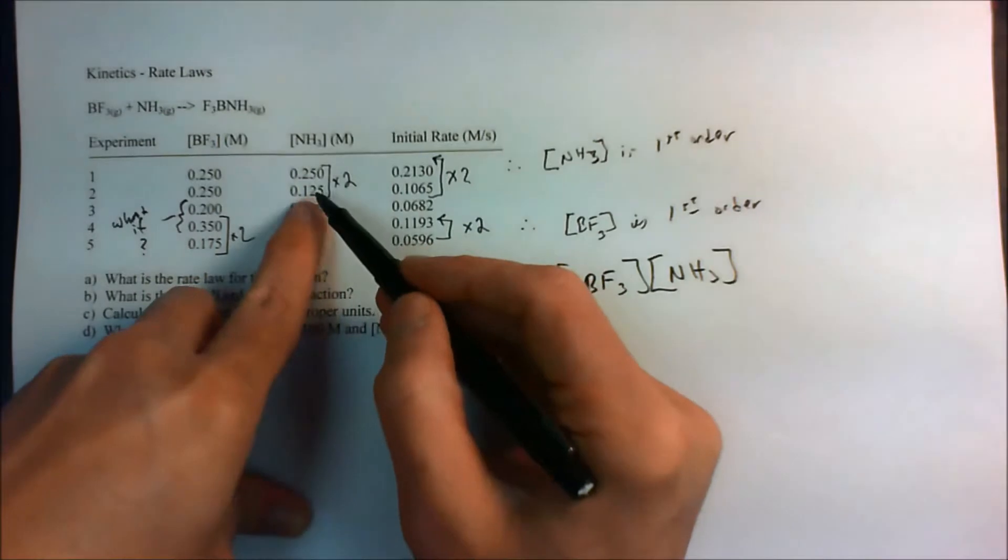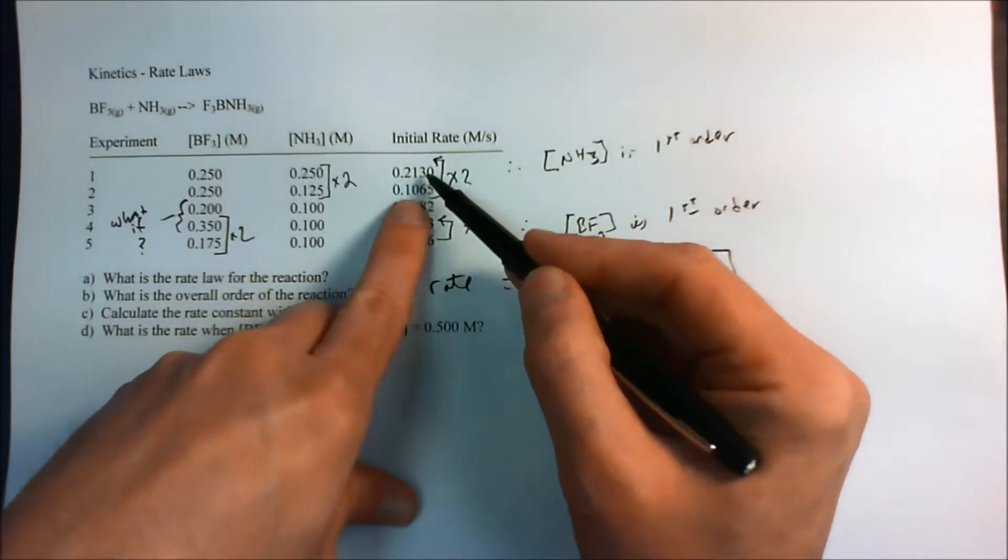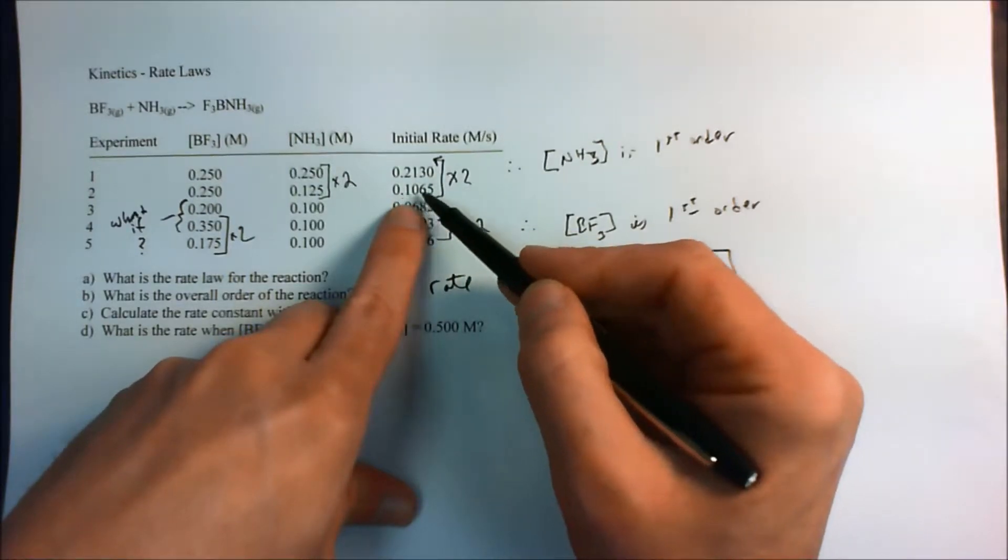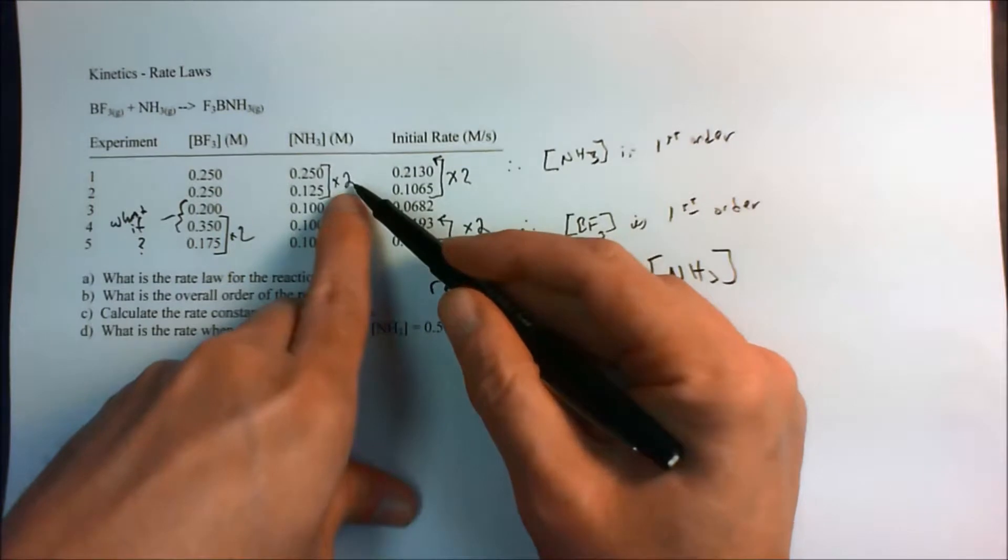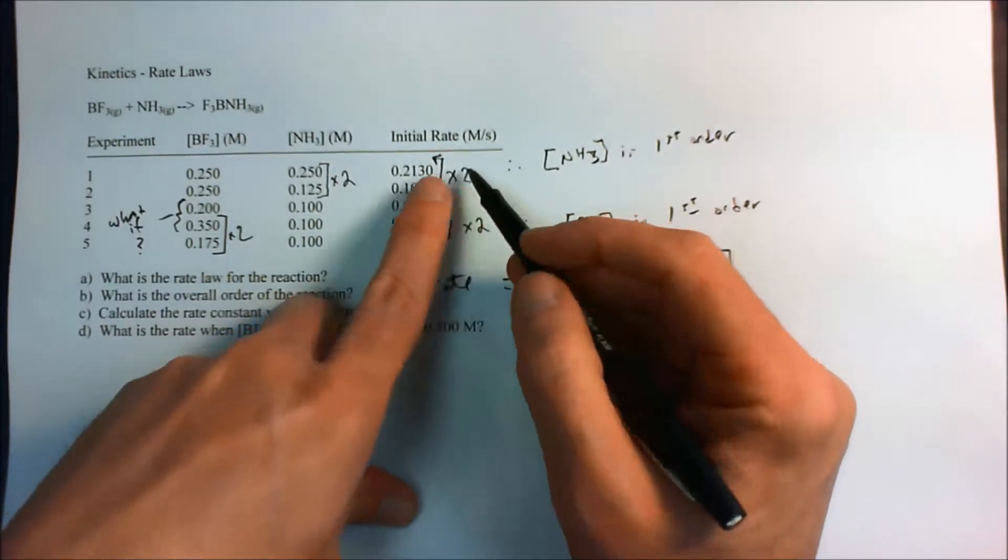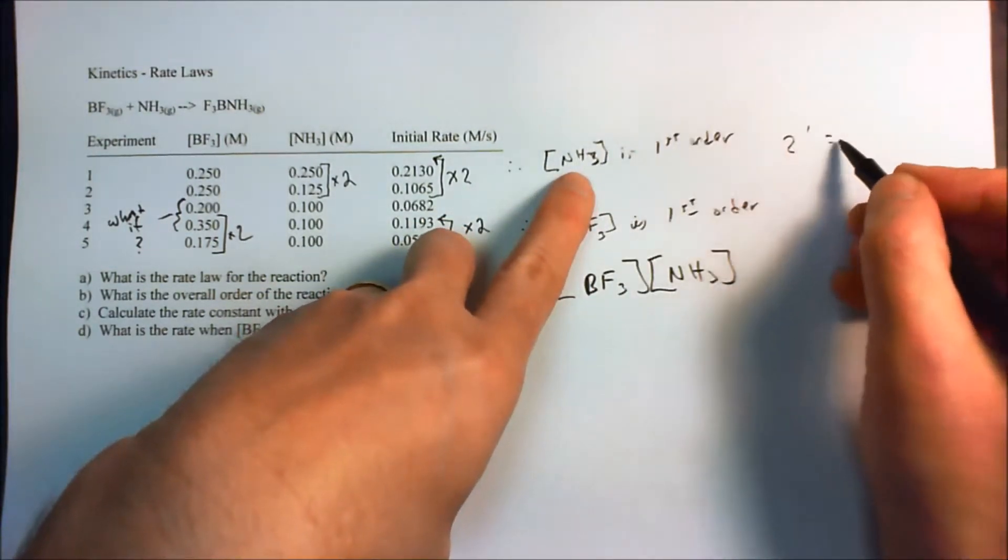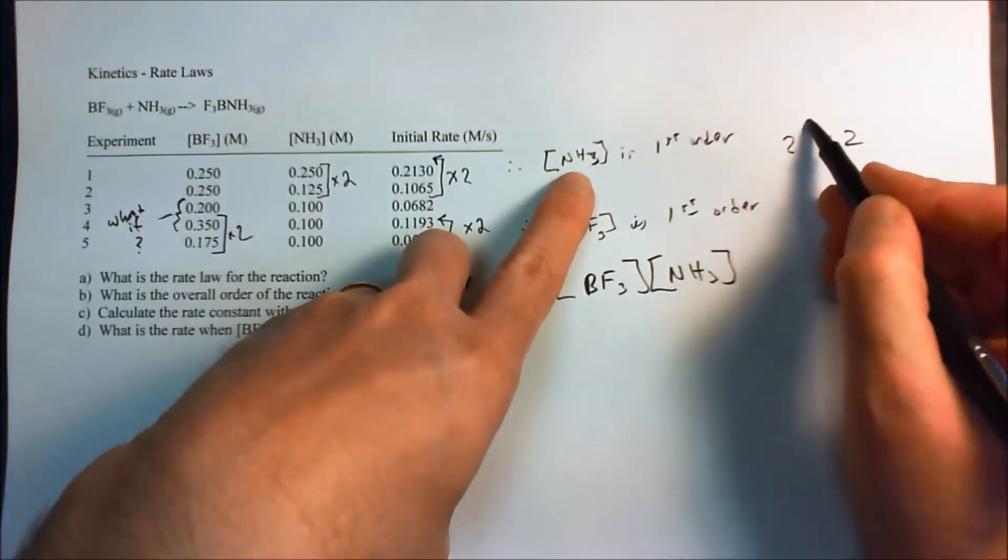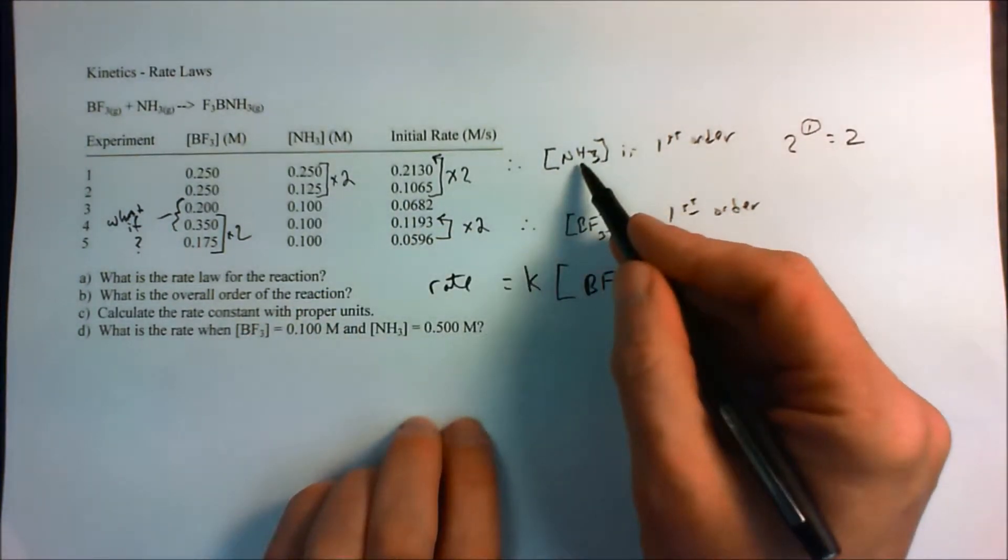If we double the concentration, we can see just by looking at it that 0.2130 is twice 0.0165. So therefore, when we doubled the concentration of ammonia, we ended up doubling the rate. And that means if this was a 2 there, then 2 to the first is a 2. And so that means that it must be first order with respect to ammonia.